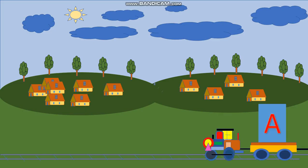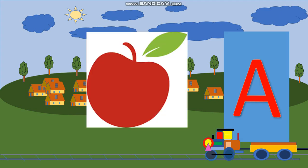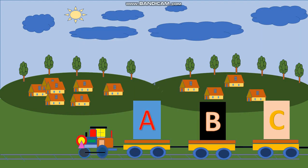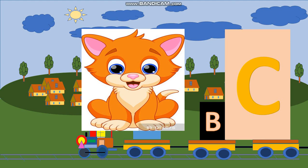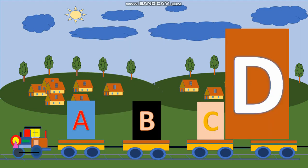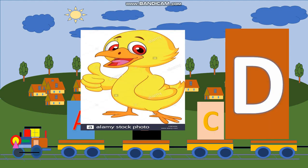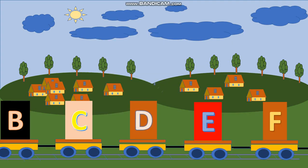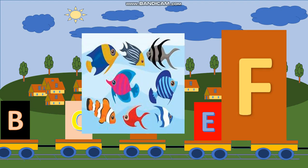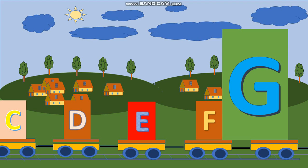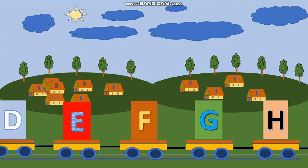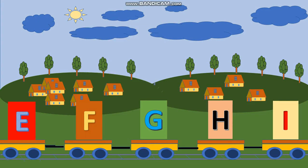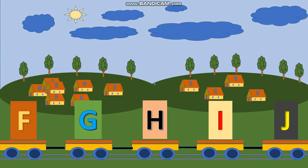A, A for apple. B, B for ball. C, C for cat. D, D for duck. E, E for egg. F, F for fish. G, G for girl. H, H for hen. I, I for ice cream.